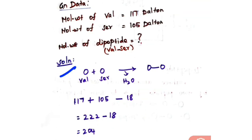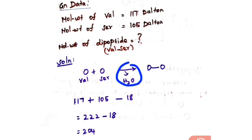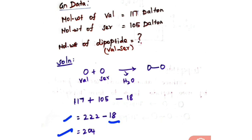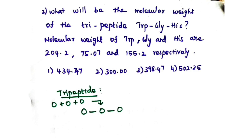To calculate the molecular weight of the dipeptide, since valine and serine are linked by a peptide bond formed by removal of a water molecule, you sum up the molecular weights: 117 (valine) plus 105 (serine), then subtract 18 (the molecular weight of water). So 117 plus 105 equals 222, minus 18 equals 204. The correct answer is 204 daltons.